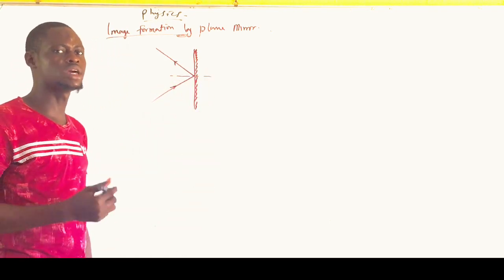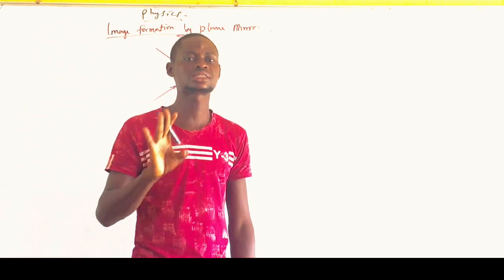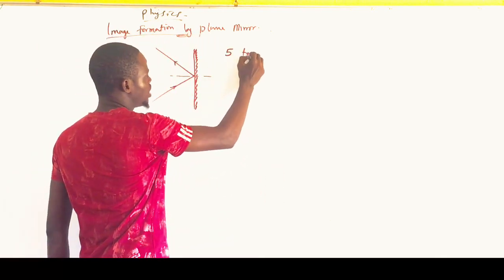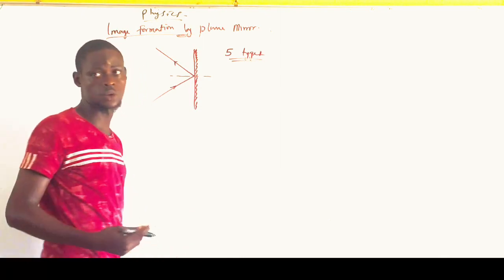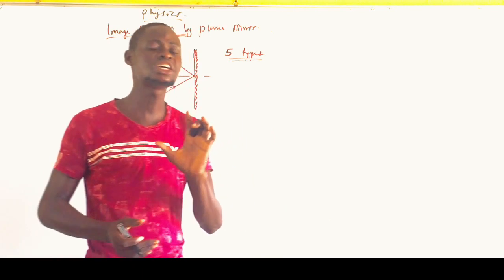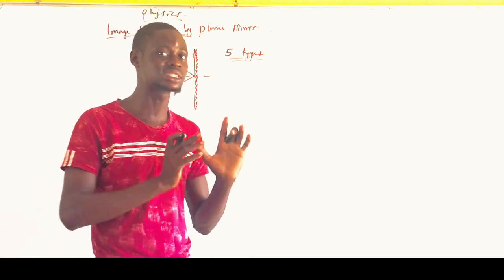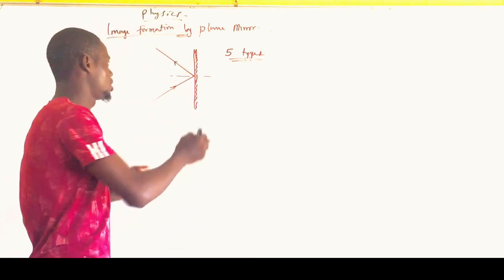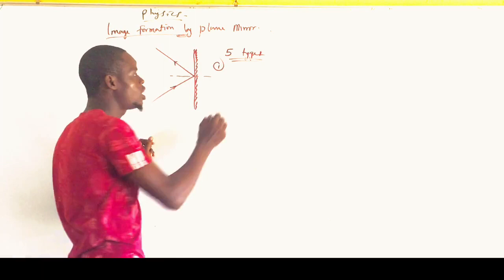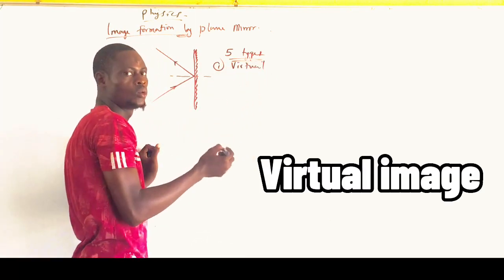How does a plane mirror form an image? A plane mirror has constant image properties — it can only form five types of image. You may be surprised, but a plane mirror can only form five types of image, and these images are always constant no matter how you change the setup. Please take note of this.